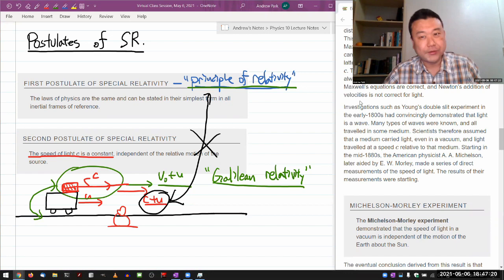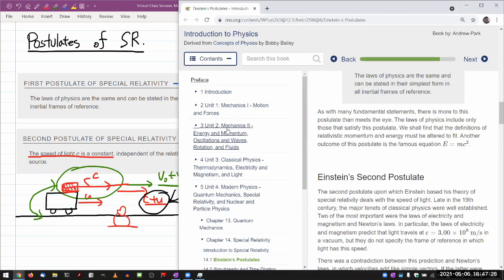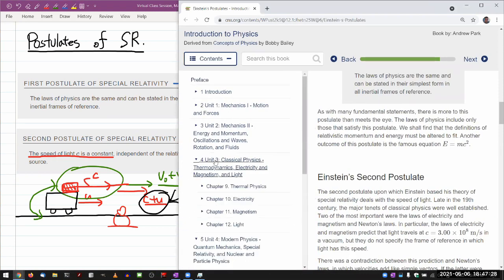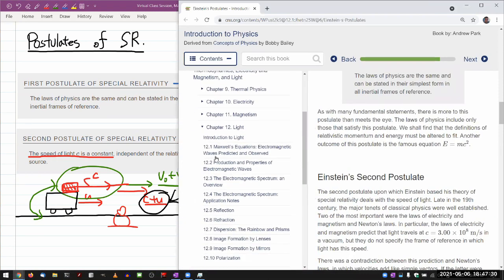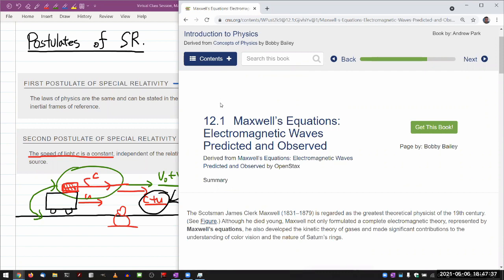It's not consistent with the first postulate of special relativity. And this is why. Let me remind you of what we covered in chapter 12. We covered in chapter 12 what leads to the speed of light. You go back to chapter 12, you look at Maxwell's equations. This is the theoretical grounding for our understanding of light, electromagnetic wave.